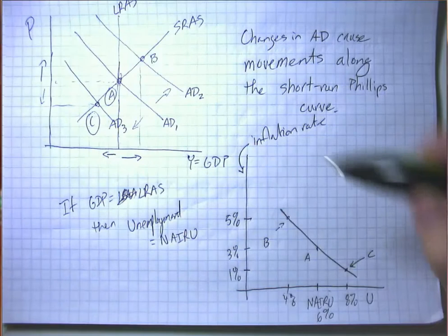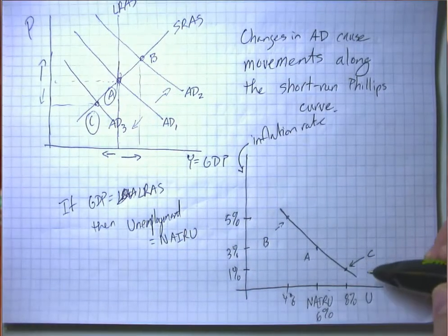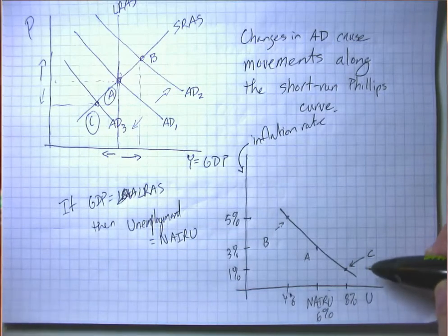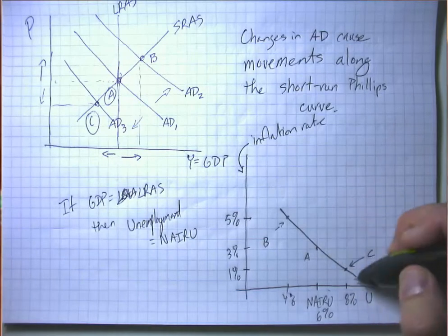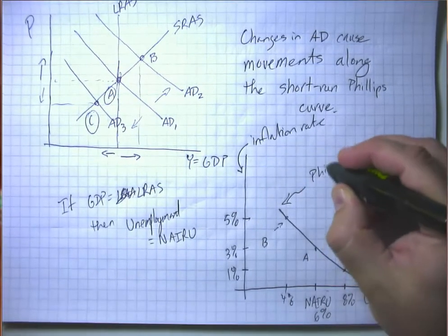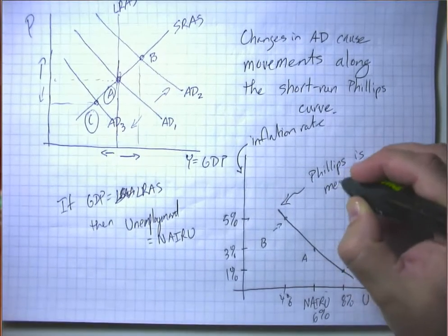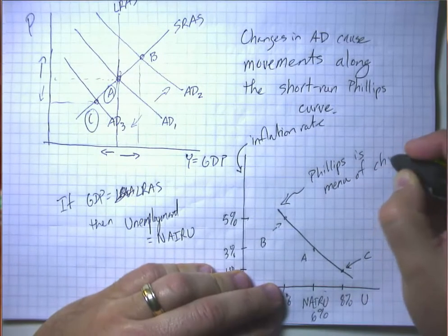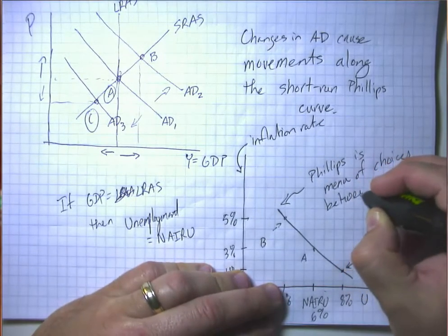And if you combine that with the knowledge of the Phillips curve, then it looks like policymakers, people running fiscal and monetary policy, now have a nice menu of choices. And in some ways, the Phillips curve does represent a menu of choices between two unpleasant things.